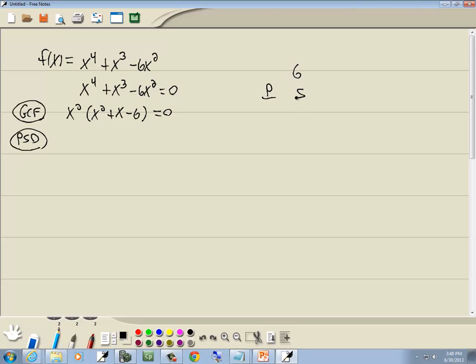So we're going to take the 6 and create our three columns. P is all the products that give us 6. So 1 times 6, 2 times 3. The S column, add these together, sum them. 1 plus 6 is 7, 2 plus 3 is 5. Difference column, subtract them, smaller from larger, 6 minus 1 is 5, 3 minus 2 is 1.